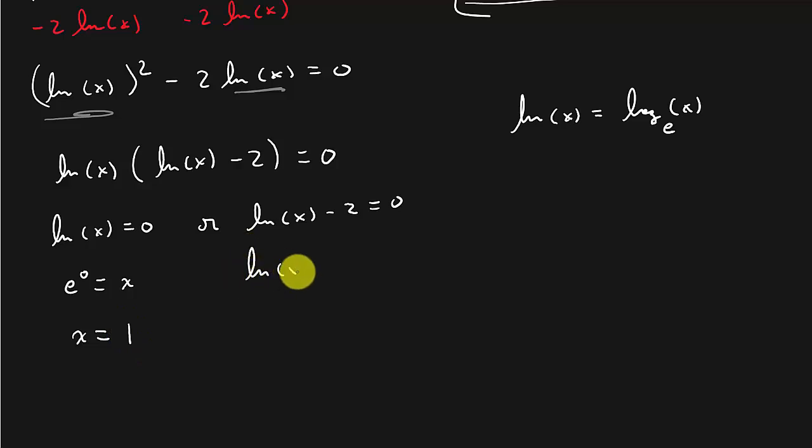And then here I got natural log x equals 2. Same thing, convert it to exponential form. I get e squared equals x. And I'll just write the x on the left-hand side. And it doesn't really matter if you write x on the left-hand side or the right-hand side. It's all the same thing.